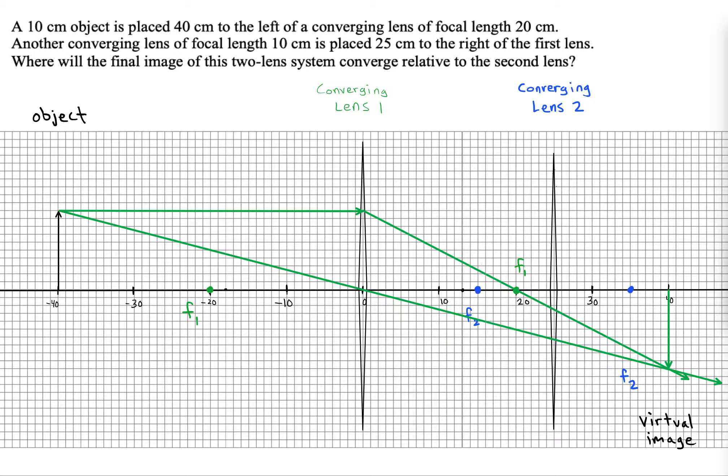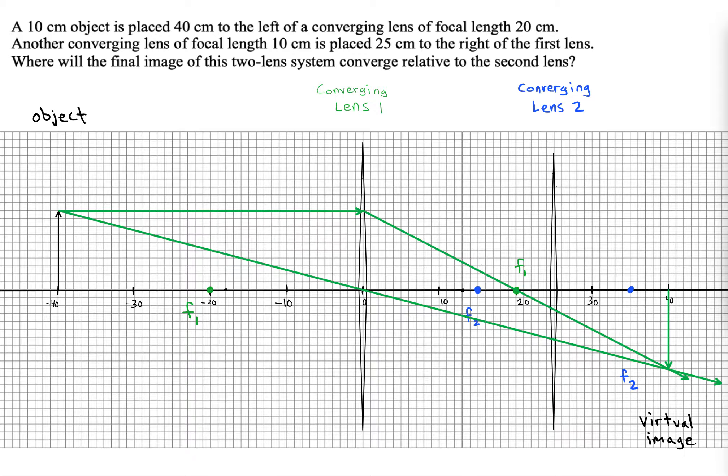So now let's see what happens when the second lens is involved. We really want to look for certain rays that have properties that we know where they're going to bend to.